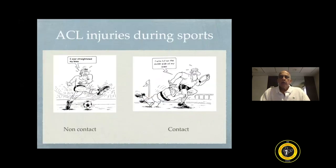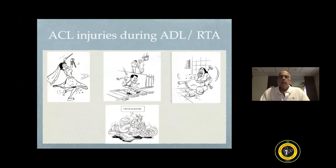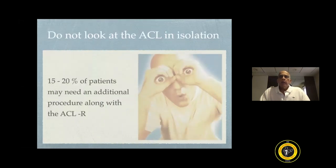Anterior cruciate ligament injuries are extremely common during sports. These could be contact or non-contact. However, over the years we have also realized that it is not only during sports but even during accidents of daily living, domestic accidents, as well as road traffic accidents that the ACL is injured. We need to remember that these ACL injuries can be low velocity and high velocity, and whenever you have a high velocity injury, you must always suspect that additional structures are likely to be injured. So do not look at the ACL in isolation.